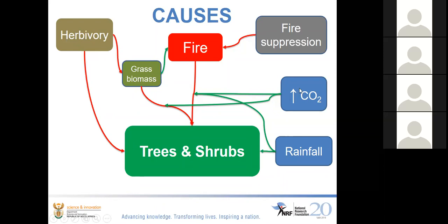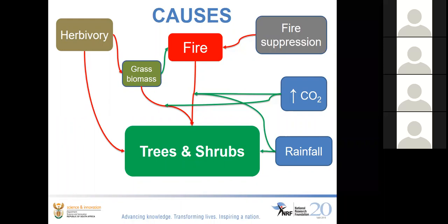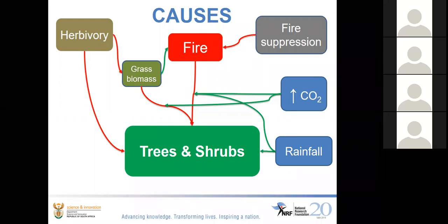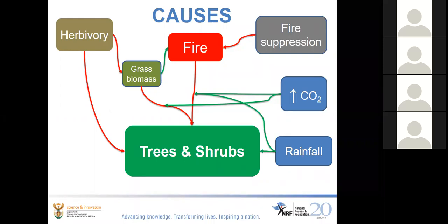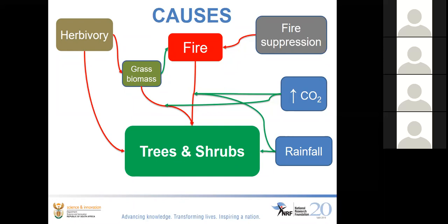More recently, increasing atmospheric CO2 has been proposed as a mechanism. The argument is that with extra CO2, trees and shrubs can grow faster, allowing them to recover better from being eaten or burned. That's a favourite theory of William Bond, our former SAEON scientist, who has written a lot about it. Also proposed, though less widely supported, is the idea that changing rainfall regimes have contributed — trees and shrubs can in theory exploit more extreme rainfall regimes than their competing grasses. Different drivers appear important to different degrees in different systems.